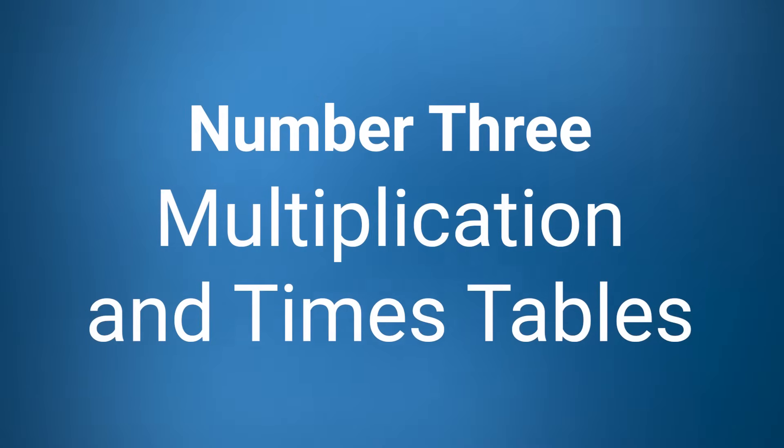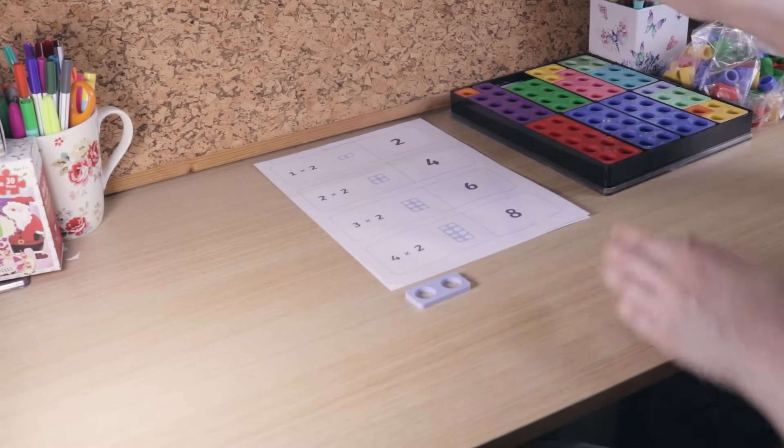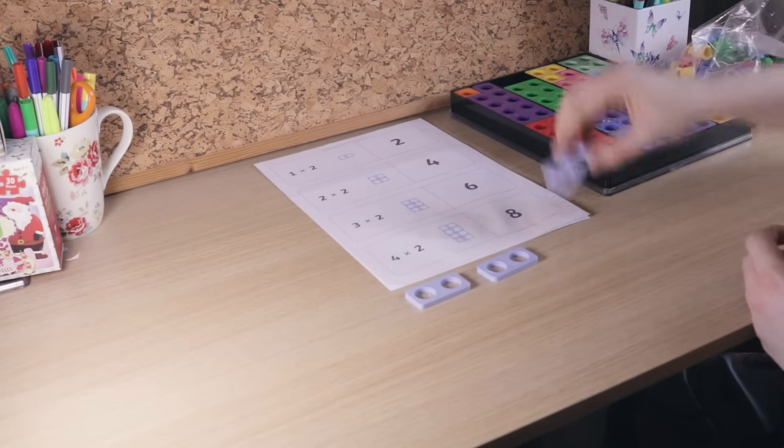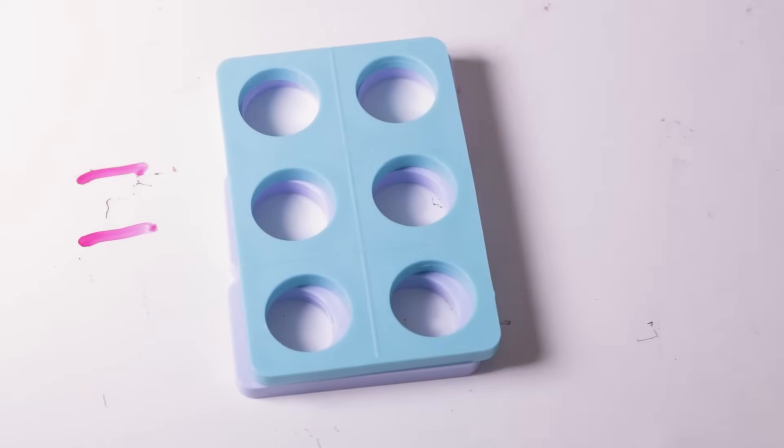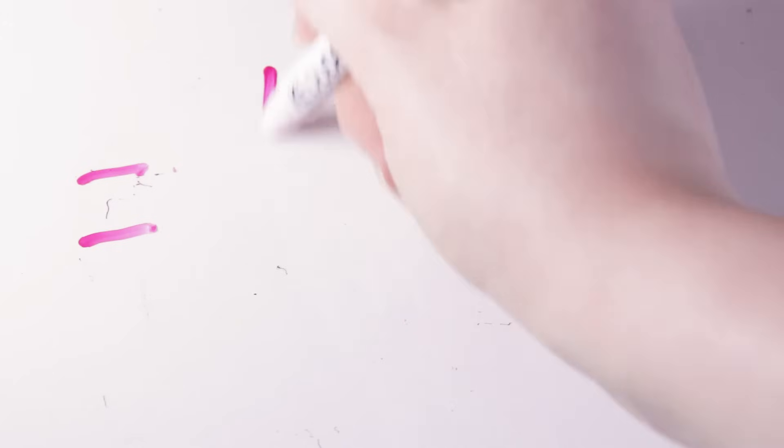Having multiple versions of the same shape helps a lot with multiplication and times tables. Take this two shape for example. If I have three lots of two shapes and combine them, I get a six. So two times three is six.